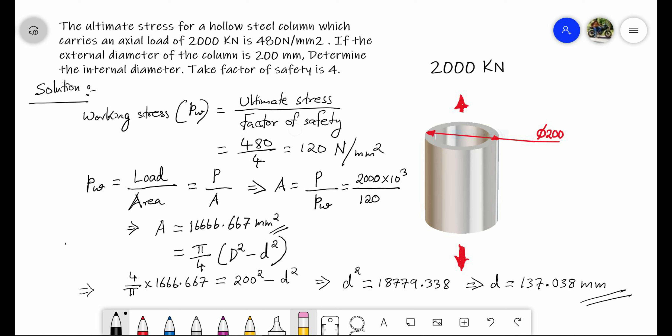In this question, a circular bar or rod is considered under a tensile load. The diameter, length, load, and Young's modulus are given. We have to find out the stress, strain, and elongation of the bar. We can simply use the formula: stress equals load by area. Since it is a circular bar, area will be pi/4 times d squared. Substituting diameter as 20 mm and load as 30,000 Newton, we get stress as 95.493 Newton per mm squared.